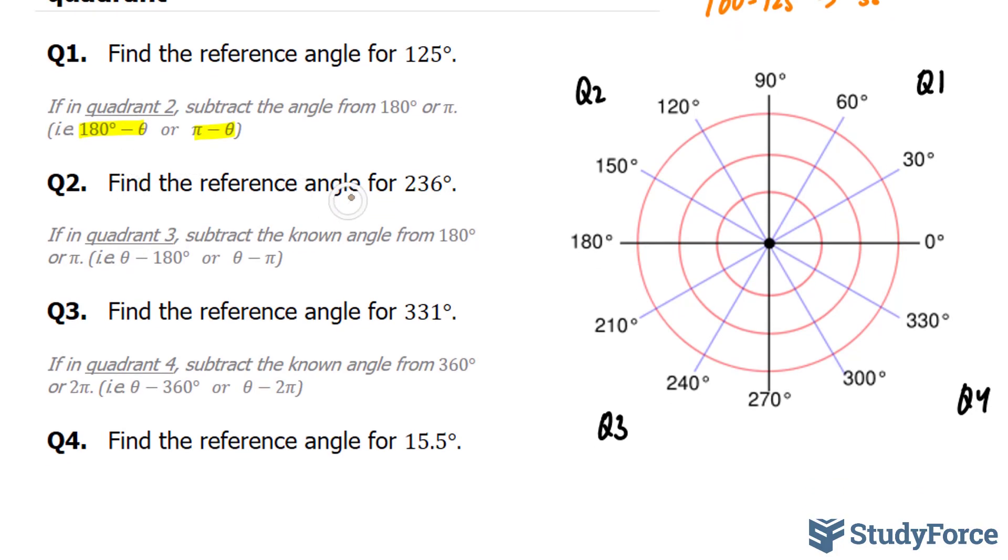In question 2, they ask us for the reference angle for an angle that is 236 degrees. So this time, our angle will exceed 180 and be in quadrant 3. According to this, if in quadrant 3 you have to subtract the known angle from 180.